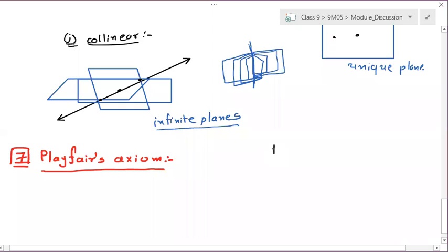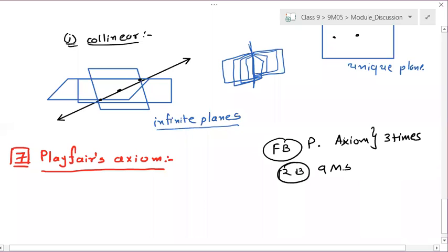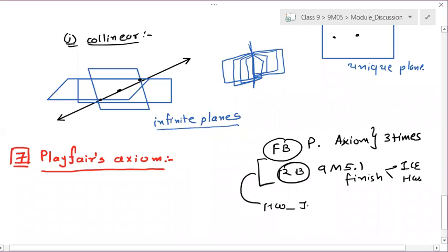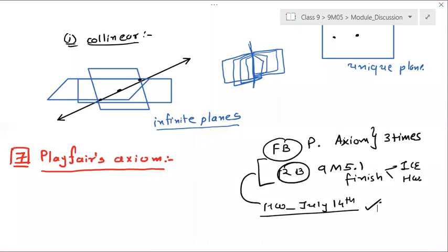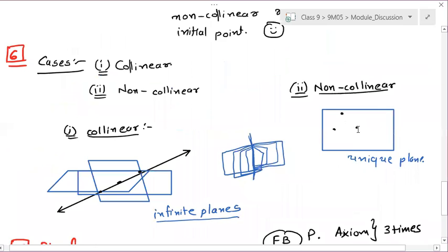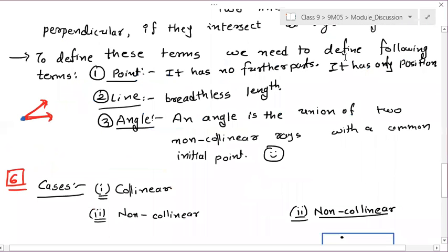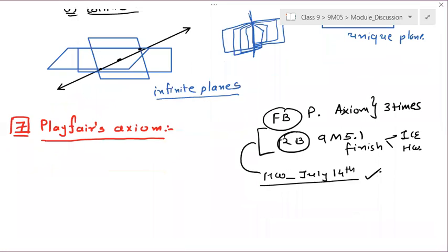Today's homework: in the formula book, write the postulates and axioms which I have told you. In the regular book, finish NCERT exercise 5.1 in class and as homework. Submit everything in one assignment — scan the formula book and regular book. Homework due July 14th.